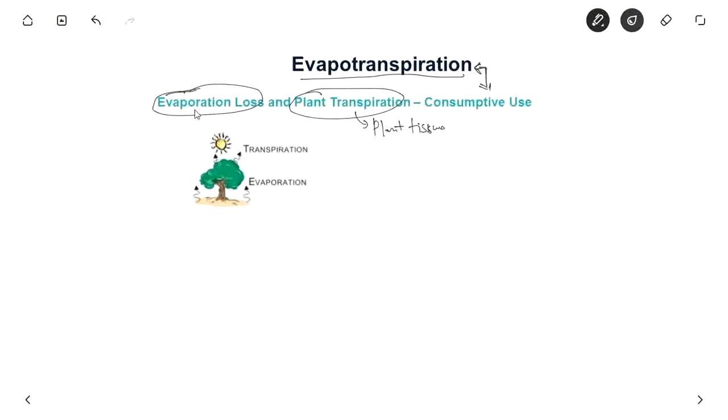So both put together, evaporation and transpiration, is known as evapotranspiration and it is also known as consumptive use which is usually represented by Cu.